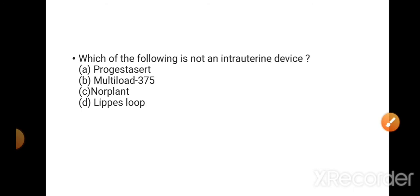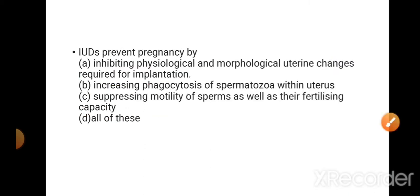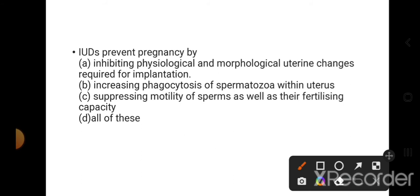Which of the following is not an intrauterine device? Very clear: norplant. It's a surgical implant, hormonal implant, so it is not an IUD, whereas the others are IUDs. IUD prevents pregnancy by inhibiting the physiological and morphological uterine changes required for implantation, yes, increasing phagocytosis of spermatozoa within the uterus, and suppressing motility of sperm as well as fertilization capacity. The option is all of these.